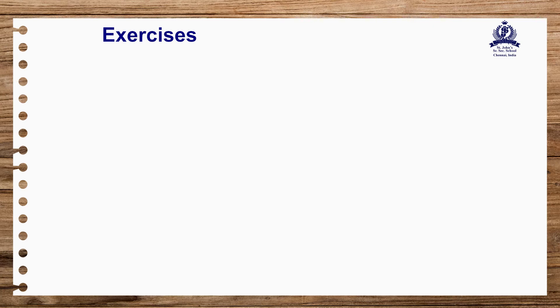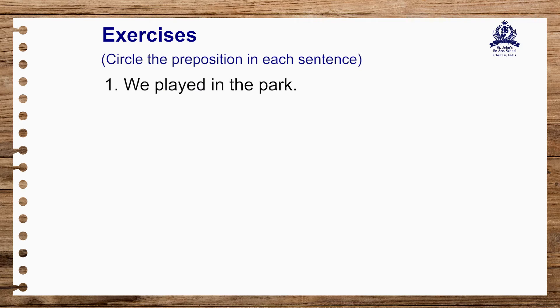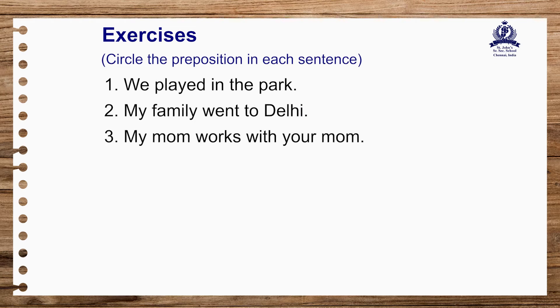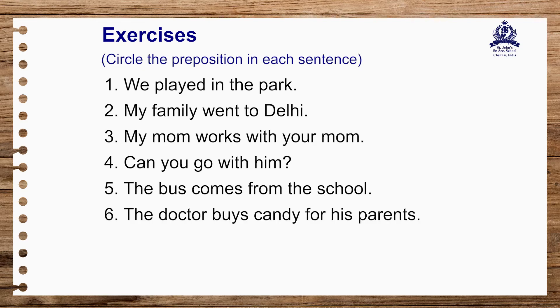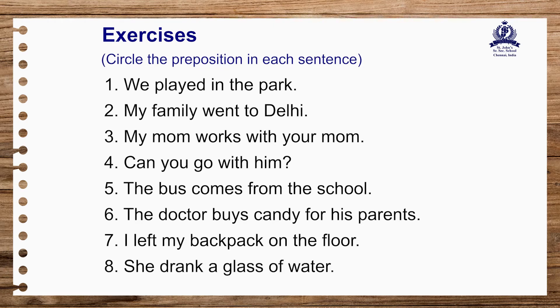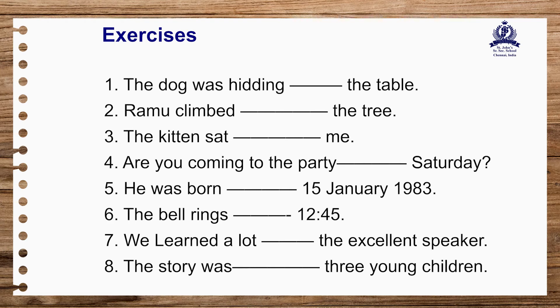Now children, there are some exercises for your practice. In example one, circle the prepositions in each sentence: 'We played in the park.' 'My family went to Delhi.' 'My mom works with your mom.' 'Can you go with him?' 'The bus comes from school.' 'The doctor buys candy for his parents.' 'I left my backpack on the floor.'